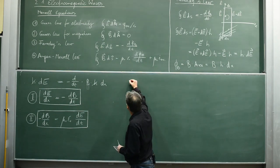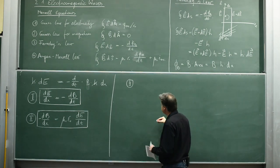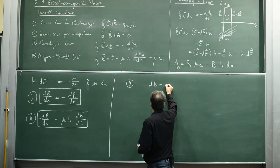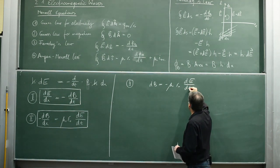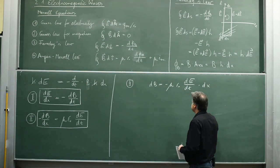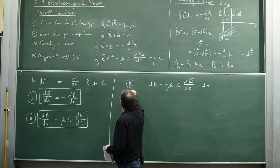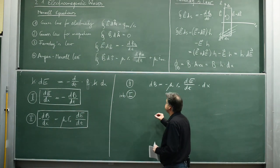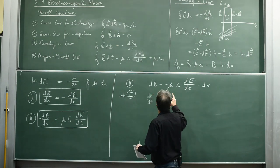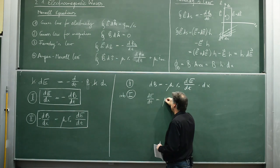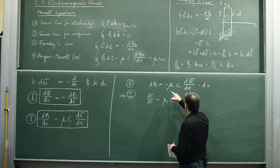Minus dB is minus mu naught epsilon naught dE by dt times dx. I'm inserting that into expression number one. That gives dE by dt. The minus sign immediately cancels out. Mu naught epsilon naught.